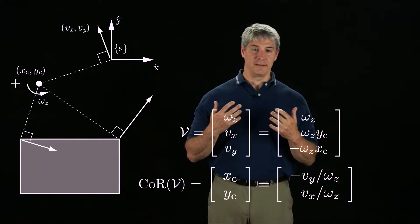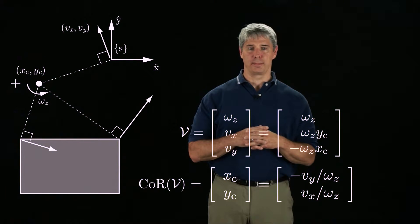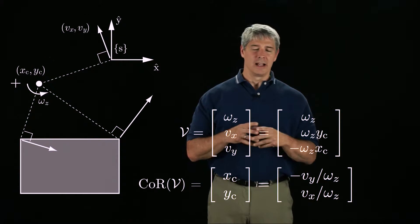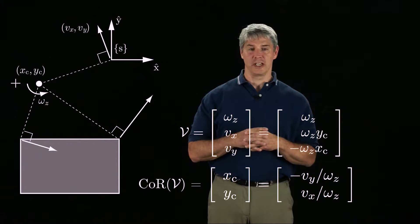The center of rotation is a convenient graphical representation of a planar twist when we only need to know the sign of the angular velocity. Let's visualize the mapping from twists to centers of rotation.